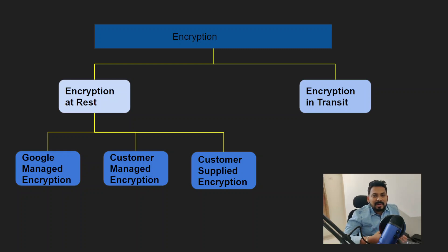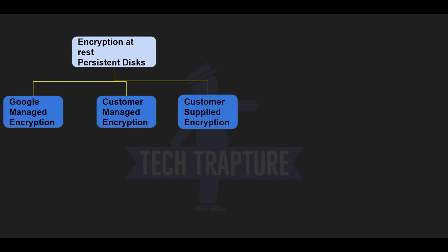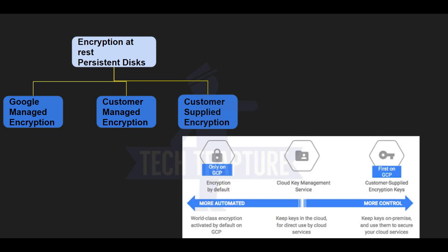Now we'll go to the Cloud Console and see how we can encrypt our data. We'll look at two examples: encrypting data in a Cloud Storage bucket and on a Google Compute persistent disk, and attaching the encrypted disk to a virtual machine. We'll demonstrate all three options: Google-managed encryption, customer-managed encryption, and customer-supplied encryption.